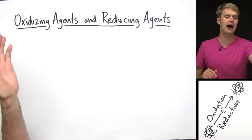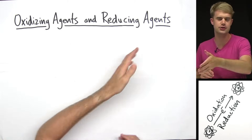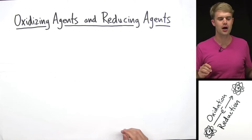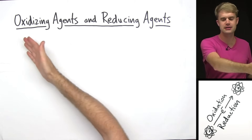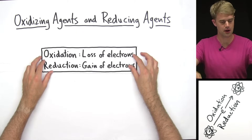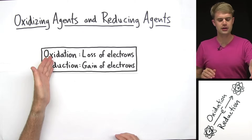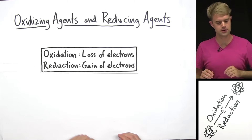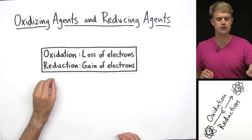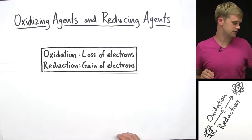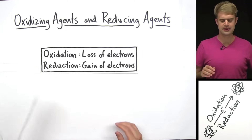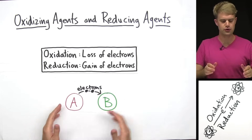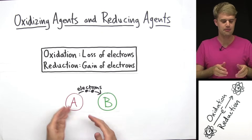If we're talking about oxidizing agents and reducing agents, let's just refresh our memory about what oxidizing and reducing are. So oxidation is a loss of electrons, and reduction is a gain of electrons. I've got a diagram here, and we've got two things, A and B.